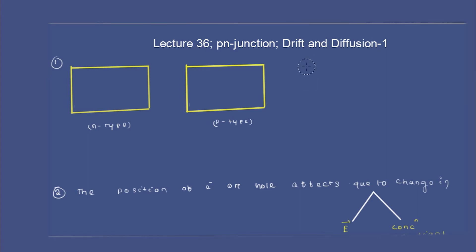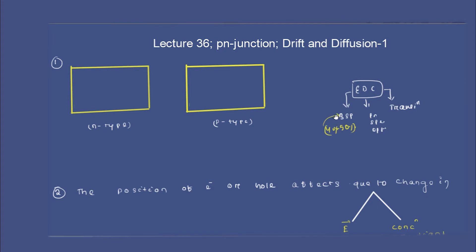Before getting to this chapter, I'd like to request you one thing. EDC is divided into three very important parts. The first part is BSP, the second part includes P-N junction, special diodes, and optoelectronic devices. Let me tell you, this part is extremely important — 40 to 50% of questions were asked from this part. In terms of core concepts of EDC, all of them lie in this part.